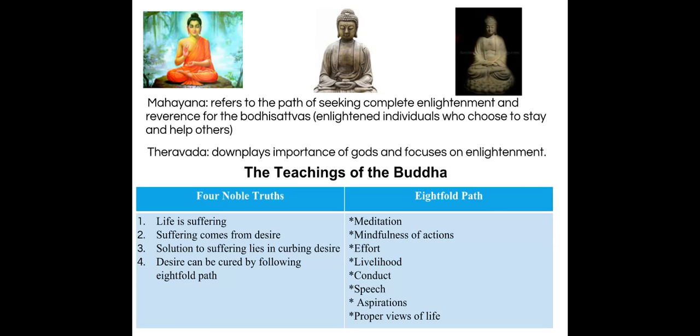Tradition holds that the Buddha's first sermon was in Deer Park near the Ganges Valley, with his first five followers also seeking enlightenment. They identified two incorrect routes to enlightenment: self-mortification and extreme self-indulgence. The Noble Eightfold Path is a means to escape the endless cycle of rebirth and achieve nirvana. The Four Noble Truths state: life is suffering; suffering comes from desire; the solution to suffering lies in curbing desire; and this can be accomplished by following the Eightfold Path, which focuses on meditation, mindfulness of actions, livelihood, conduct, speech, aspirations, and proper views of life.